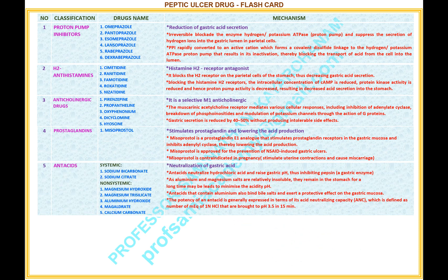Number 5. Name of the classification: Antacids. Drugs under this classification — systemic antacids: 1. Sodium bicarbonate, 2. Sodium citrate. Non-systemic antacids: 1. Magnesium hydroxide, 2. Magnesium trisilicate, 3. Aluminium hydroxide, 4. Magaldrate, 5. Calcium carbonate.